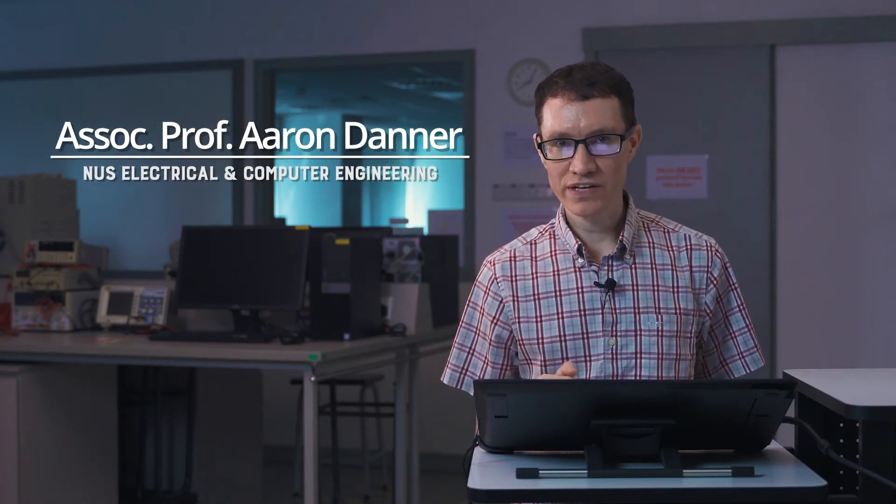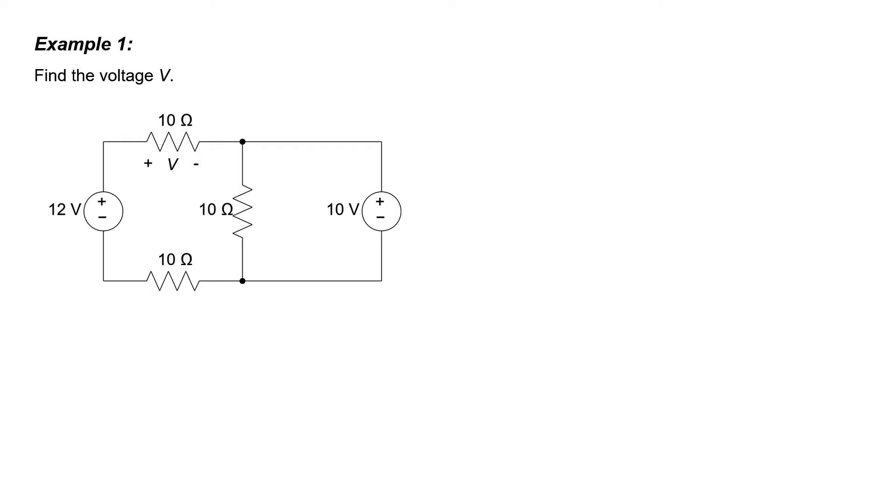Let's look at three examples where we need to apply the Kirchhoff voltage rule and the Kirchhoff current rule. In the first example, we're tasked with finding the voltage V across the 10 ohm resistor.